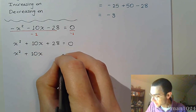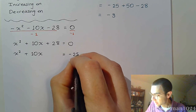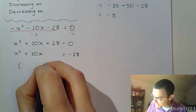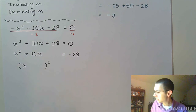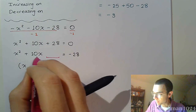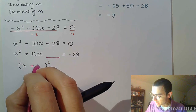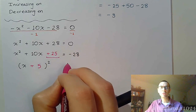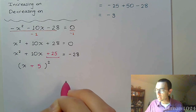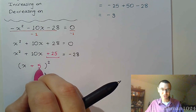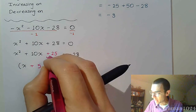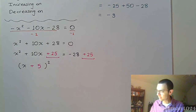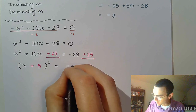We move 28 to the other side to get x² + 10x = -28, then complete the square. Half of 10 is 5, so 5² = 25 completes the square. We add 25 to both sides: (x + 5)² = -28 + 25 = -3.